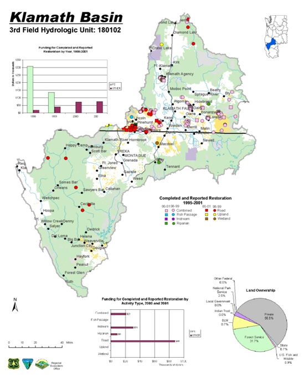The primary tributaries of the Klamath together account for 77% of the total Klamath watershed. The remaining land area is drained by smaller tributaries such as Jenny Creek, Fall Creek, and Blue Creek.